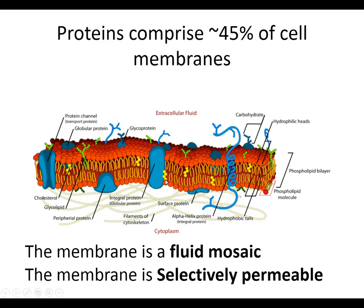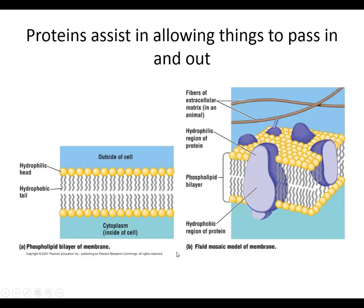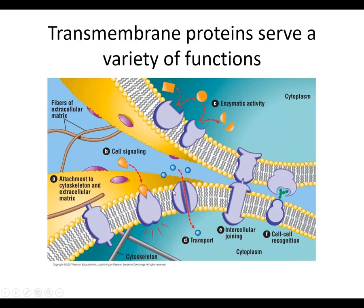Proteins comprise about 45% of cell membranes. We talked about how it's a fluid mosaic that's selectively permeable. Proteins assist in allowing things to pass in and out, and they do a lot of other things too. The jobs of a cell membrane protein are really important. Cell signaling — if we see this little orange teardrop-shaped molecule, this is a signaling molecule; it could be a steroid or a hormone like insulin. Binding of a receptor protein will tell that cell what to do.